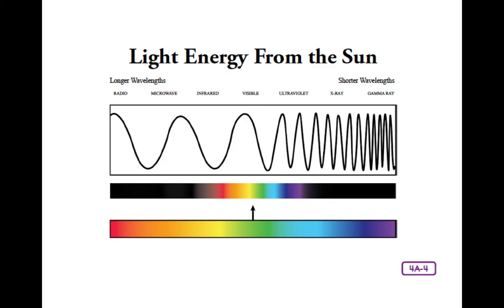"However, and this is what is really interesting," said Samuel eagerly. "The color of an object is determined by whether that object transmits, reflects, or absorbs light. Sometimes, it's a combination."